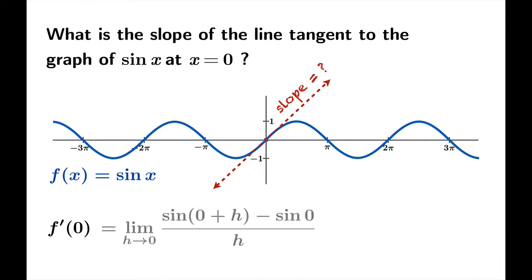We need to apply our definition of derivative with sine substituted for f. This expression simplifies quite nicely because sine of zero is zero, and this boils down to a limit we've seen before. It's the limit of sine h over h as h approaches zero, and that's one. So indeed this tangent slope at the origin is one.